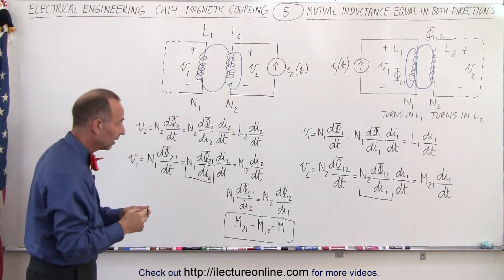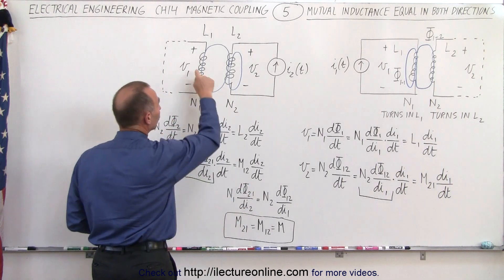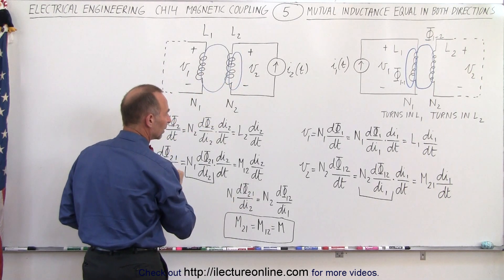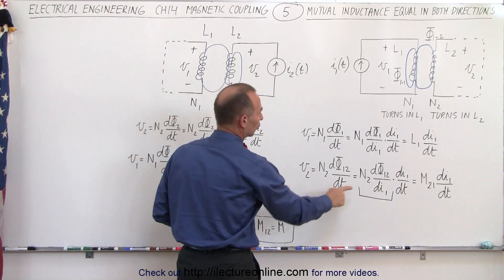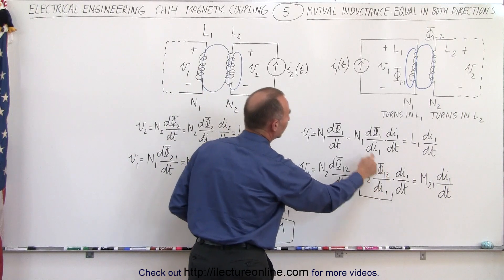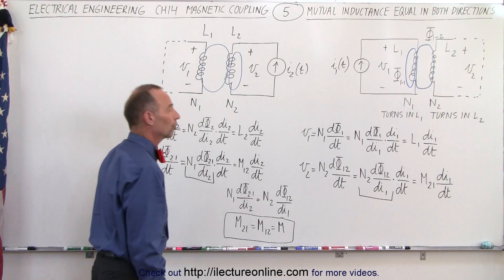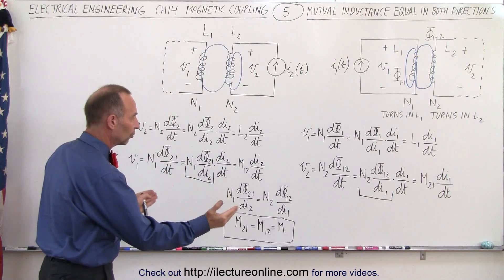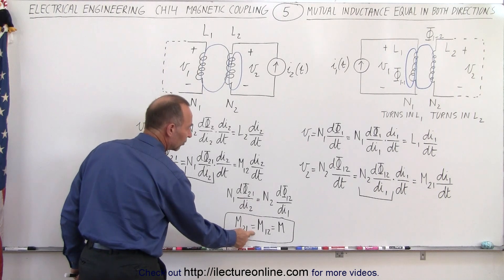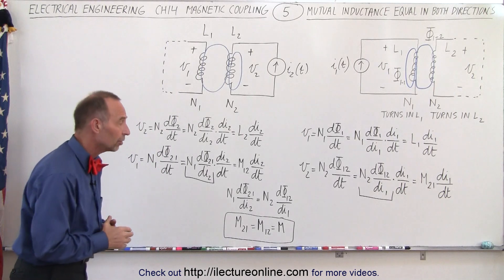It turns out that the number of turns in the first inductor times the rate of change of the flux through that inductor caused by the change in current in the other circuit equals the number of turns in the second inductor times the rate of change of the flux through that inductor with respect to the change in current in the other circuit. Since those are equal, the mutual inductance of 2 to 1 equals the mutual inductance of 1 to 2, which is simply the mutual inductance M.